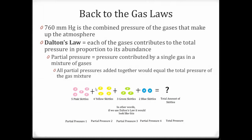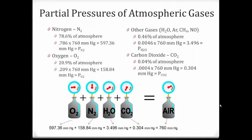We can think of it like Skittles. If my bag of Skittles has pink, yellow, green, and blue, they each contribute to the total amount of Skittles proportionate to how many there are. And I can think of that for gases as well. If I know the partial pressure of one gas, second, third, fourth — those added together would make my total pressure. So let's do those calculations to get an idea of what we're working with.